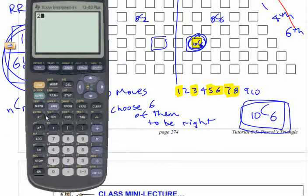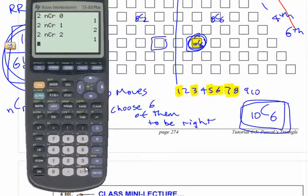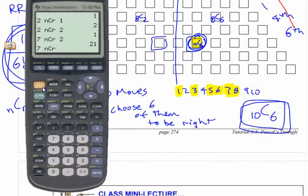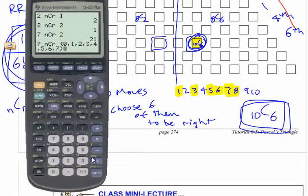On the calculator, if you do 2C0, 2C1, 2C2, it spits out the individual values. You can also do 7C2 for a single value. But if you want all values for an entire row at once, you can use the list notation with curly brackets — entering values from zero all the way up to the end — and it gives you the entire row of Pascal's Triangle at once.